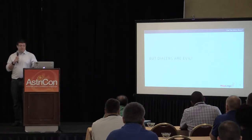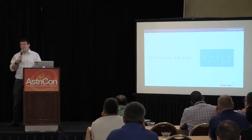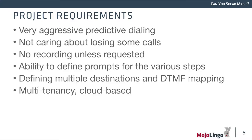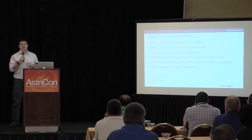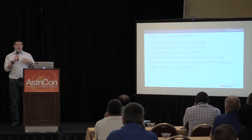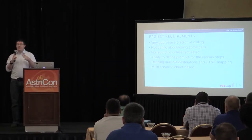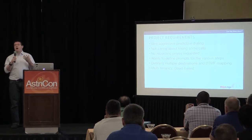Dialers can sometimes be evil. Project requirements: we've been dealing with a very aggressive predictive dialer running up to a 10x multiplier — for every agent, running 10 calls. The most important thing in this domain is dialing out as much as possible and reaching as many people as possible. We don't care if we lose calls. We don't record calls unless it's in the quality assurance phase.